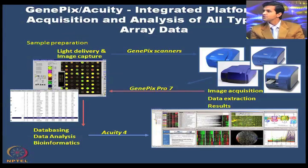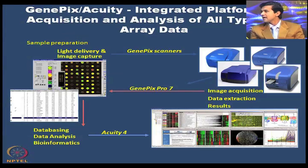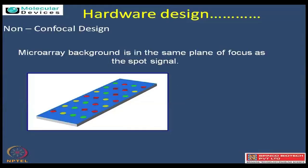Another software which is also used is Acuity, which is actually a third-level statistical analysis software. In brief, the hardware is attached with a data-acquiring software called GenePix Pro, and GenePix Pro then gives the results to Acuity which can be further analyzed for statistical analysis. GenePix microarray is based on two special designs.